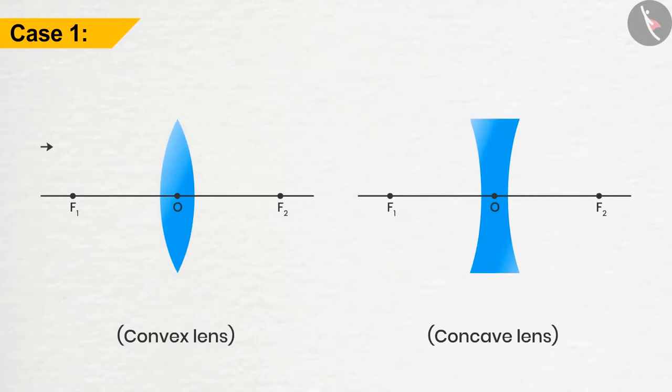In case 1, if the ray of light is travelling parallel to the principal axis, after refraction, it passes through the focus located on the other side of the convex lens and appears to diverge from the focus located on the same side of the concave lens.